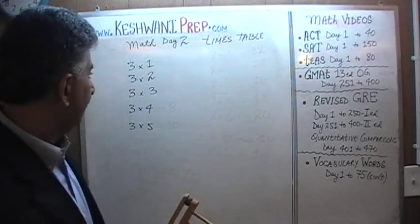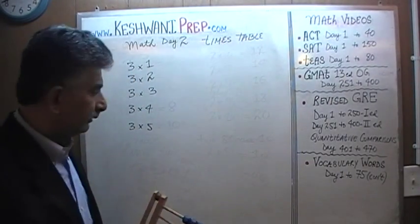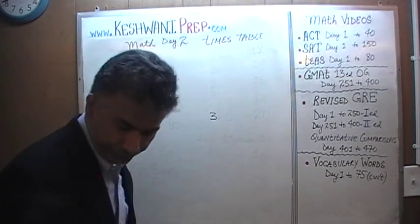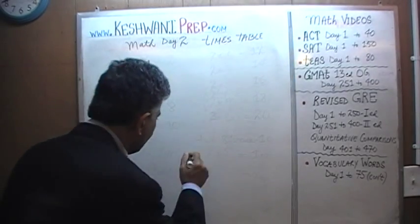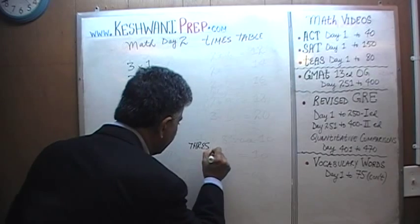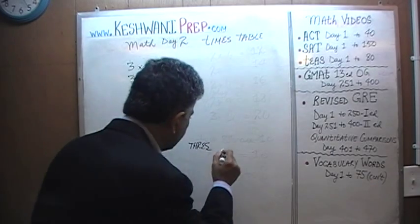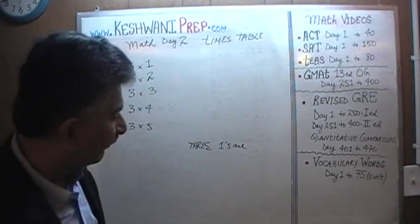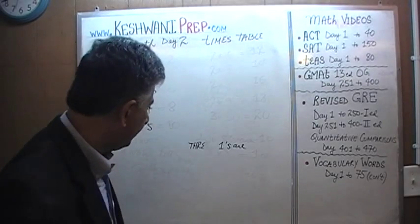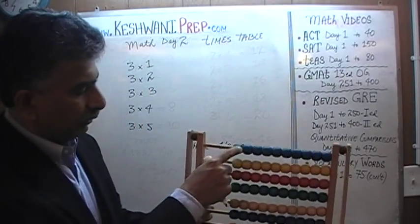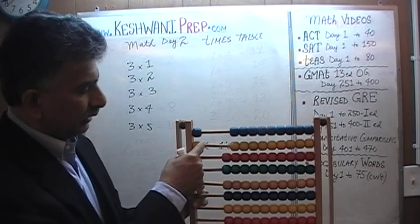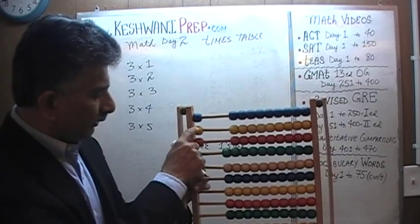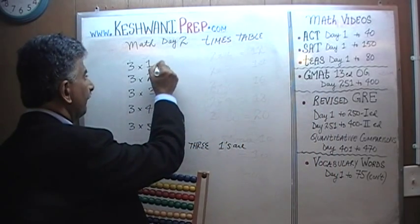First we have 3 1's. 3, 3 1's are 3, this is how we write it. How much are 3 1's? Well let's find out, shall we? 1 one, 2 ones, 3 ones. Now we have 3 1's. 3 1's are 1, 2, 3. 3 1's are 3.